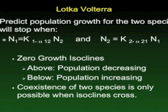The Lotka-Volterra model basically says that a species is going to stop growing when N, the species number, equals K, the carrying capacity for that species, minus alpha of species 2 on species 1, times the number of species 2. That indicates where the growth of species 1 would end. The same formula applies for species 2, indicating the level at which species 2 would no longer grow when these two are living together.